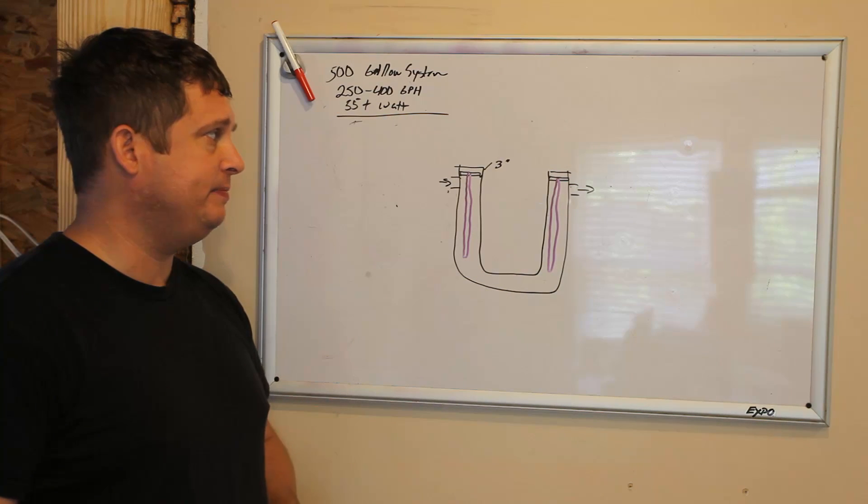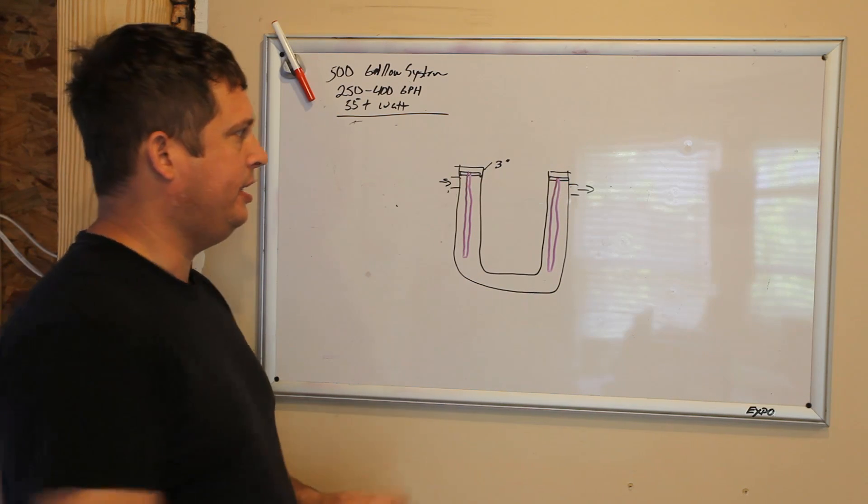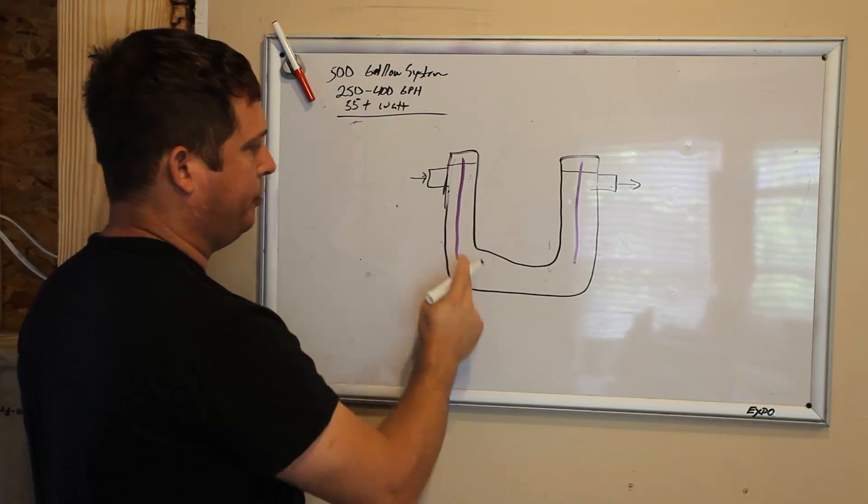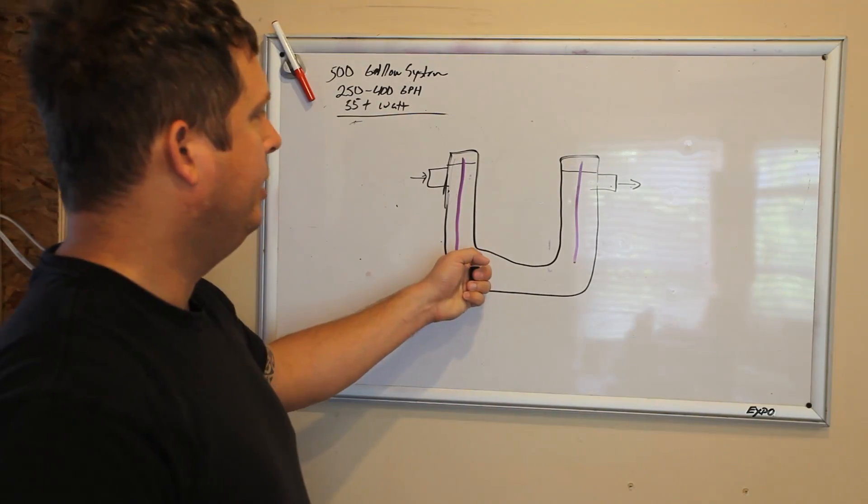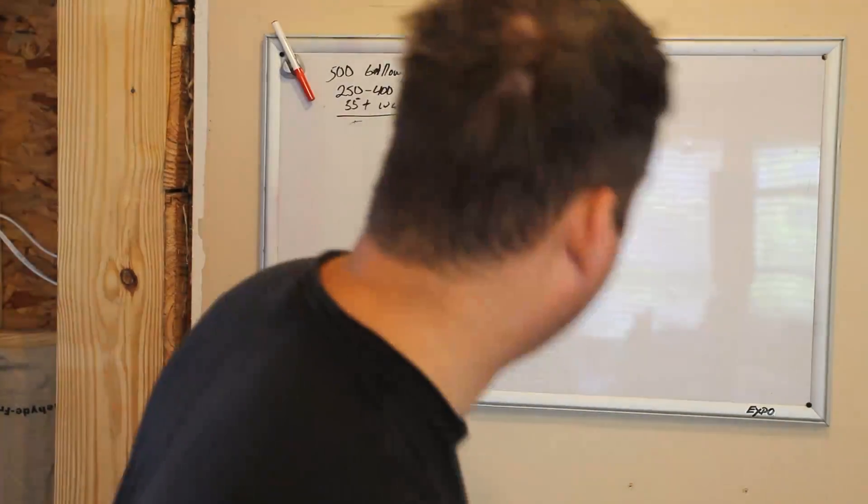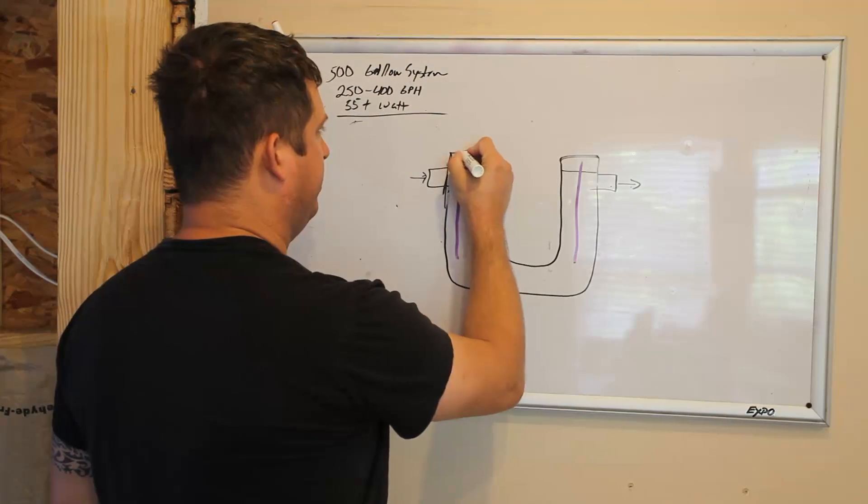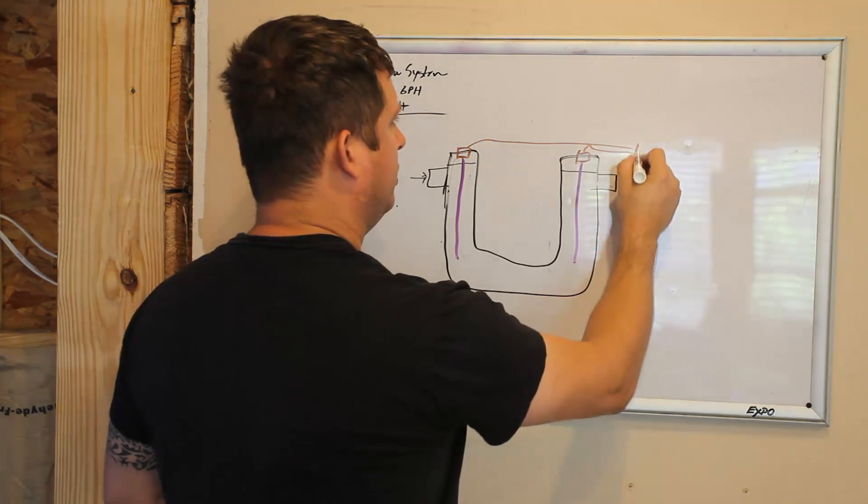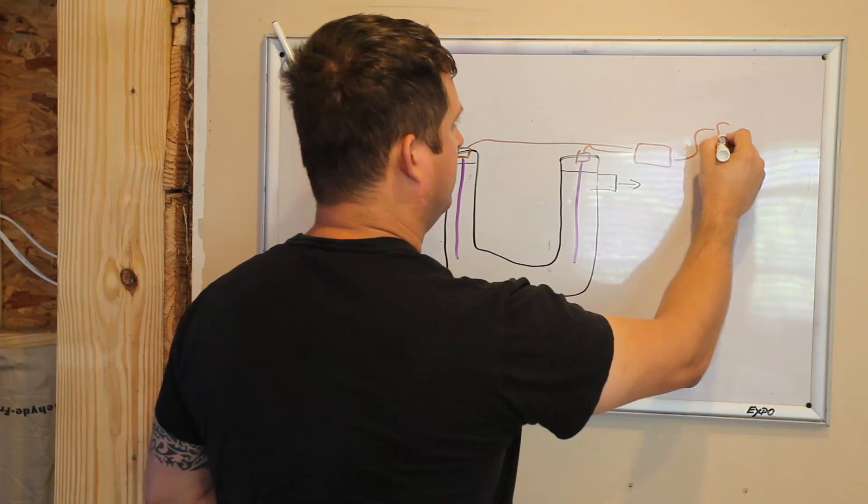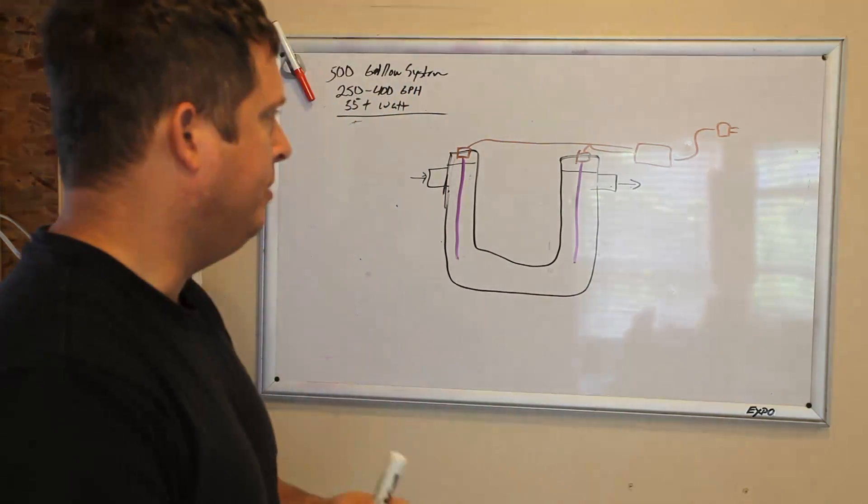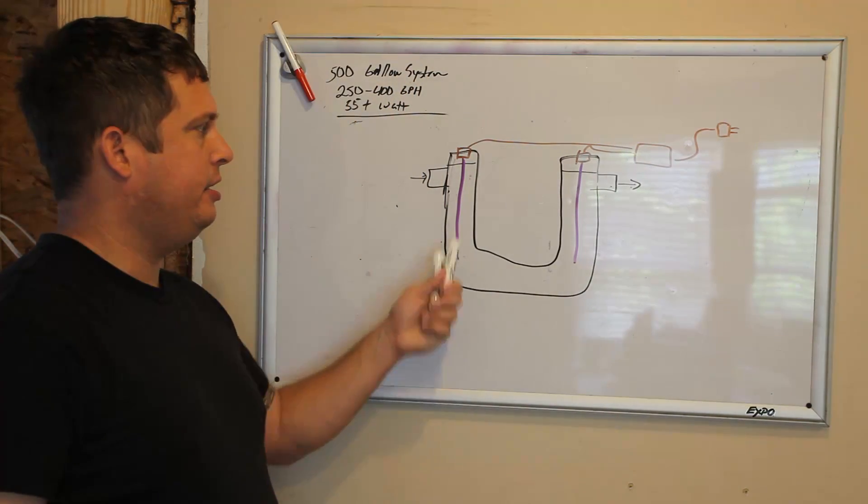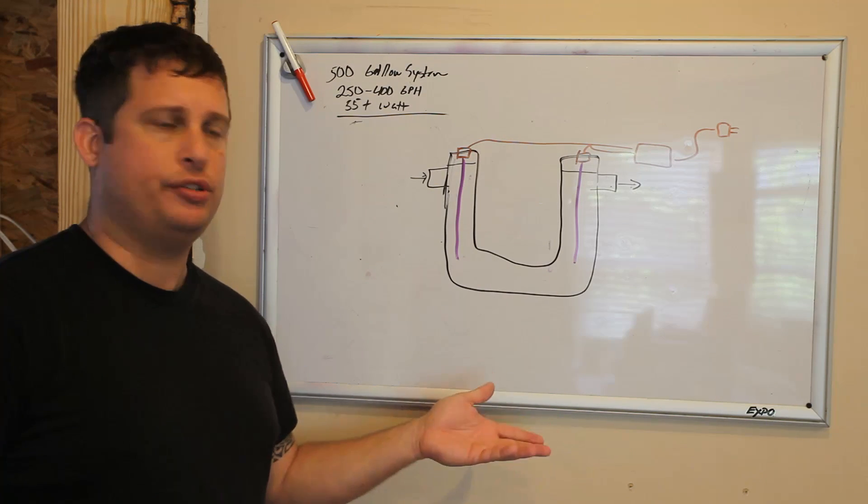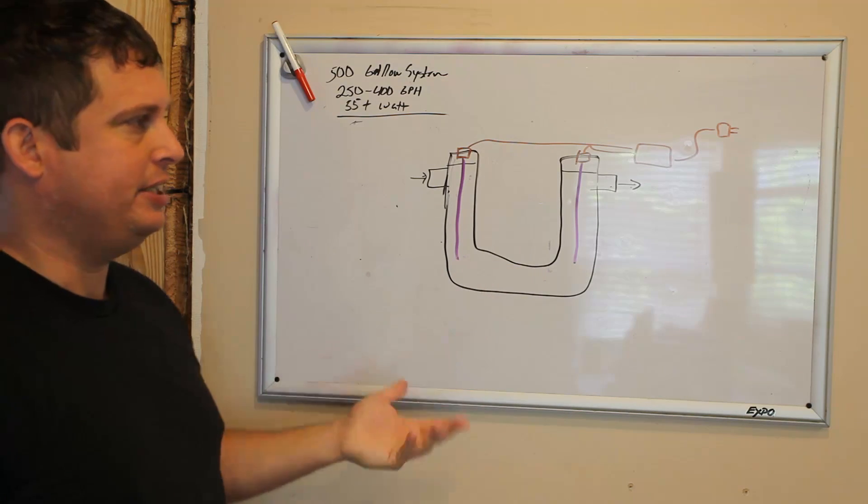So this system, as the water comes in it will go through here and it will be sterilized by the UV light. The electrical wiring will attach to the top here, the ballast will be somewhere over here, and it'll be a plug.